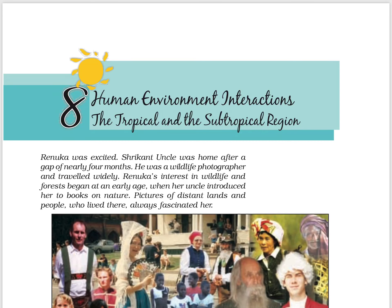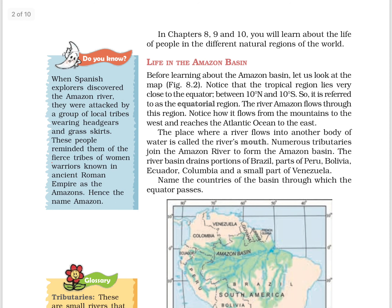Hello friends, welcome to the NCERT sessions. In this video I am going to explain Chapter 8 of Class 7 NCERT Geography. Here we have a fact: when Spanish explorers discovered the Amazon River, they were attacked by a group of local tribes wearing head garments and grass skirts. These people reminded them of the fierce tribes of women warriors known in the ancient Roman Empire as the Amazons — hence the name Amazon came.